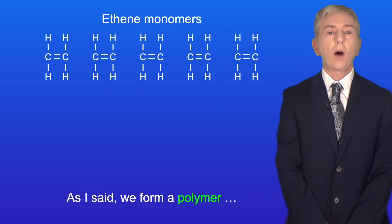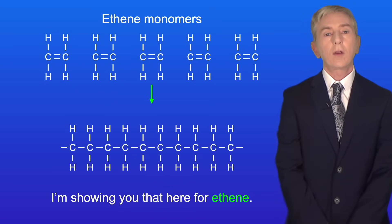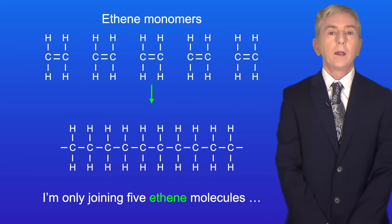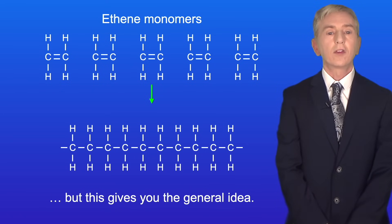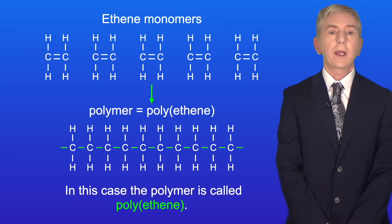As I said we form a polymer by joining together thousands of monomer molecules. So I'm showing you that here for ethene. Now I'm only joining five ethene molecules but this gives you the general idea. So here are the ethene molecules joining together to form the polymer. In this case the polymer is called polyethene.